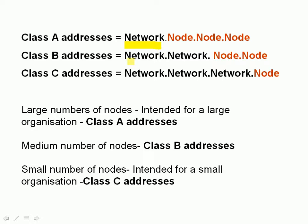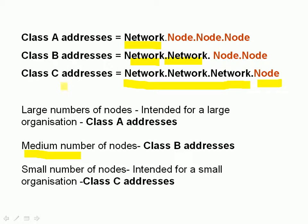A class B address is split into 16 bits for the network and 16 bits for the node. This was intended for medium-sized organizations where you've got many medium-sized organizations that require quite a few node addresses. Finally, the class C address uses 24 bits for the network — so you can have lots of networks — and eight bits for the node, which limits you to 254 node addresses on each network. This was intended for small organizations that wouldn't require many node addresses.